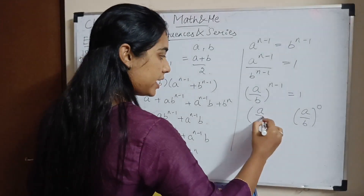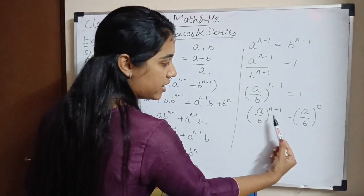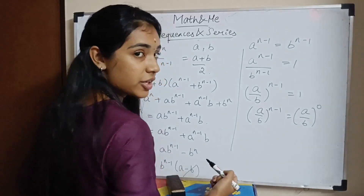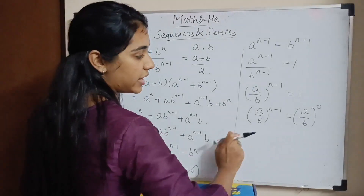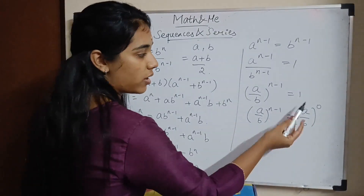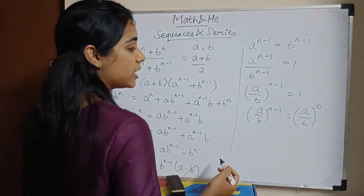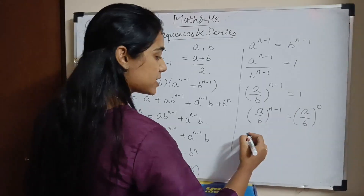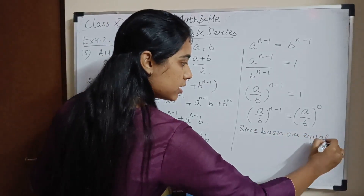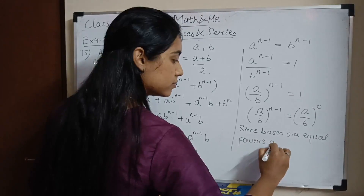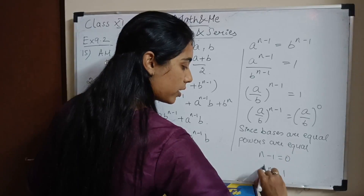Since the bases are equal, the powers are equal: n − 1 = 0, therefore n = 1. Remember when to put 0 and when to put 1 — don't get confused. So the value of n is 1.